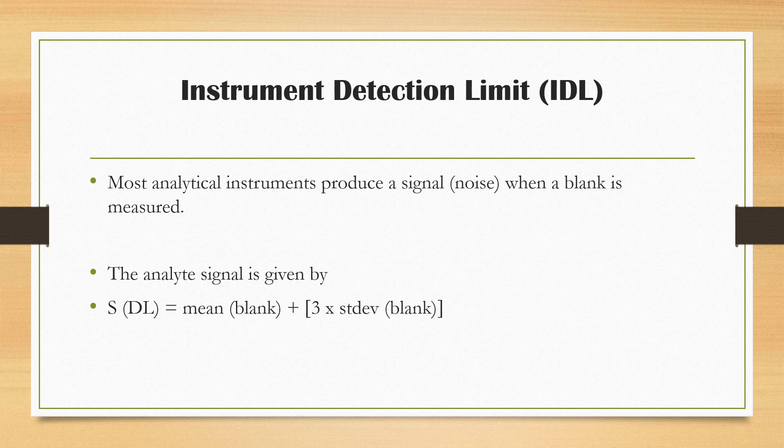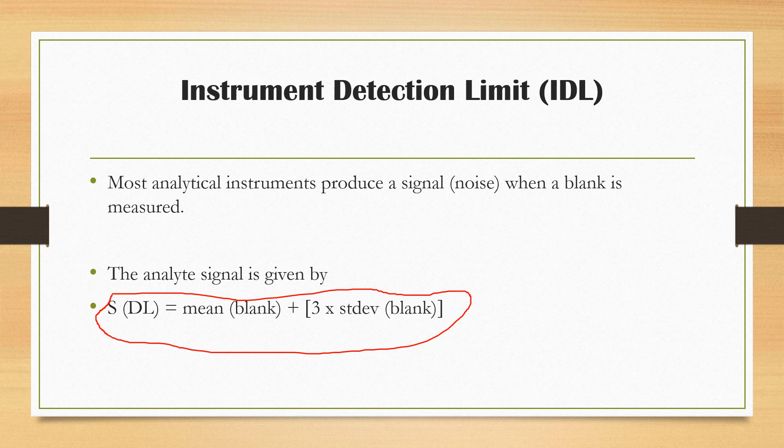You run the blank solution for a couple of times, preferably five to eight times. From the values that you obtain, you can calculate the mean and the standard deviation of your blank solution. Then you insert it into the formula for calculating detection limit to find out the detection limit of that particular analytical instrument. The formula is given as the mean of the blank solution plus three times the standard deviation of the blank solution.